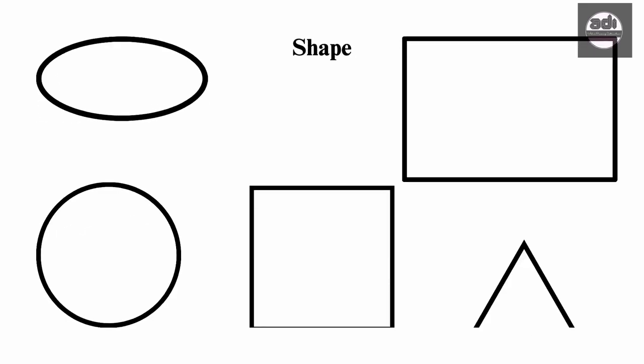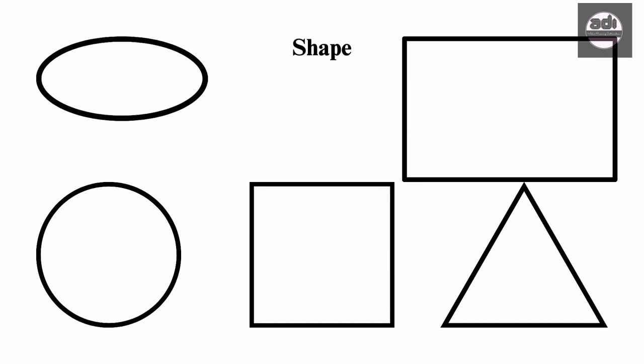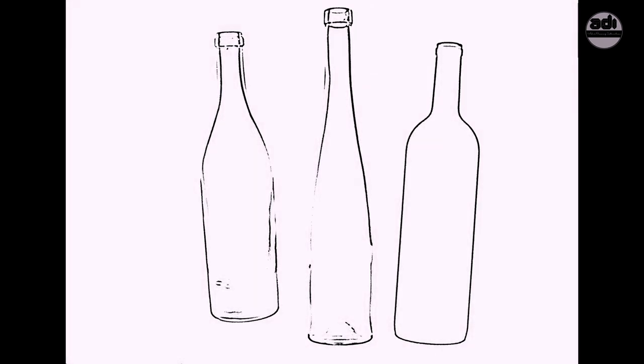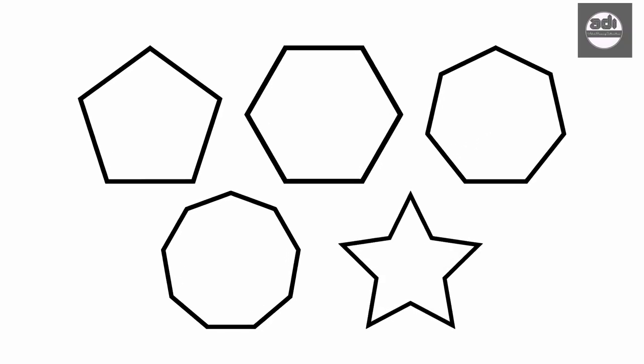When you join lines, straight and or curved lines, you get shapes. Shapes are two dimensional and usually show the outline of something. There are no limits to how many sides a shape can have.